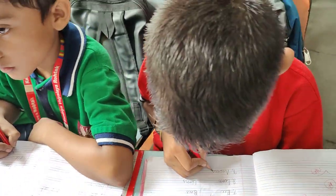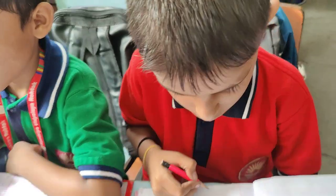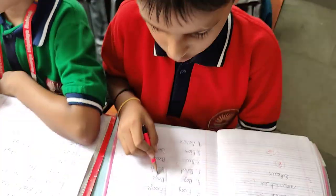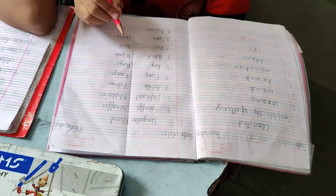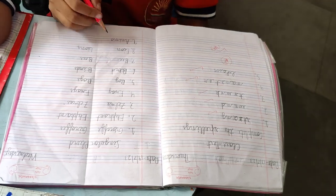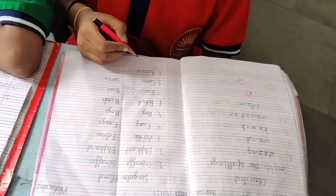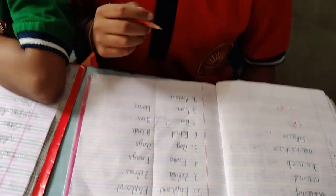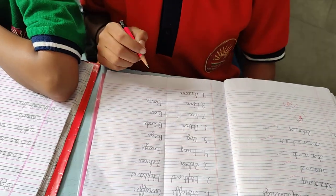Okay, what is the plural word for doe? Doe, doe. Okay, what is the plural word for elephant? Elephants.